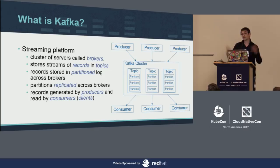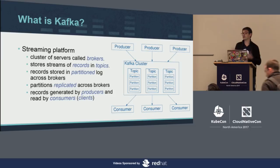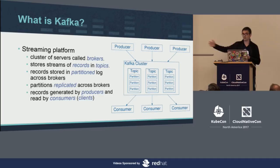This is supposed to be an advanced session, so I guess you all know Kafka. To be on the same page: Kafka is a streaming platform. You have a cluster of servers called brokers, storing streams of records in topics. Topics are split into partitions spread over all brokers, which allows for horizontal scalability. You can add new brokers and partitions to accept more traffic, replicate those partitions for high availability, and if one broker dies you have a backup on another. You have producers and consumers as clients of this platform.